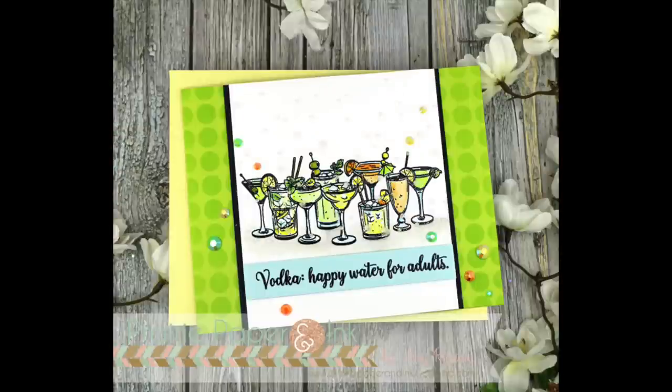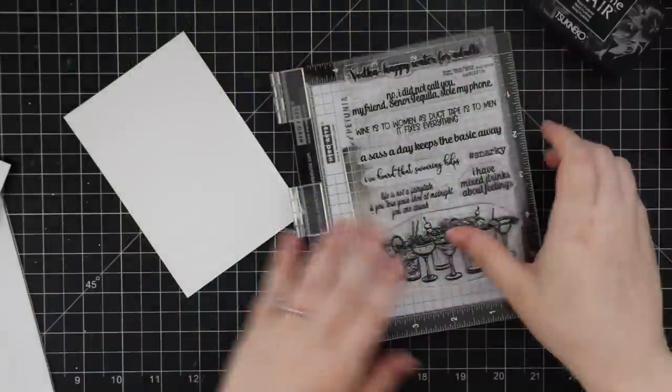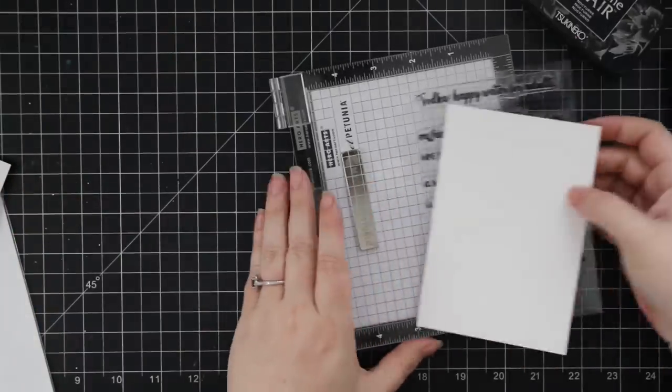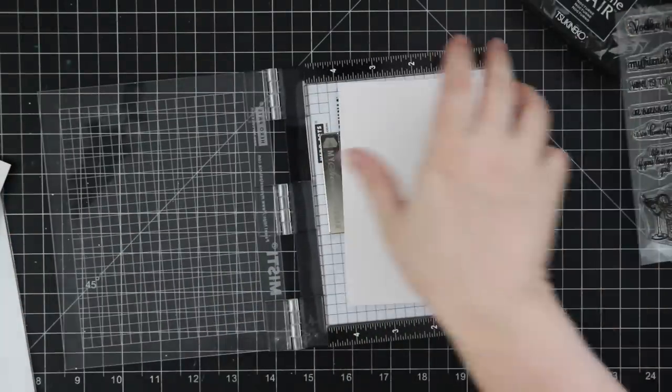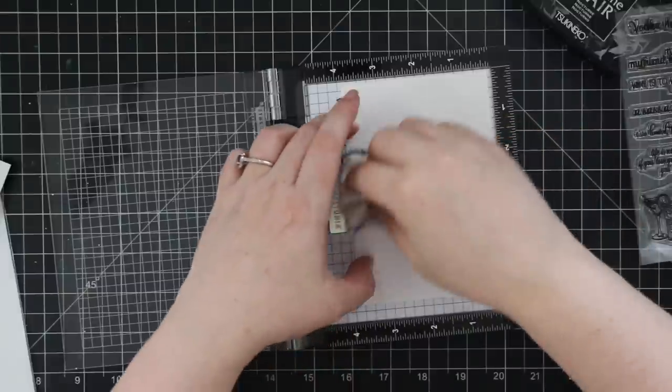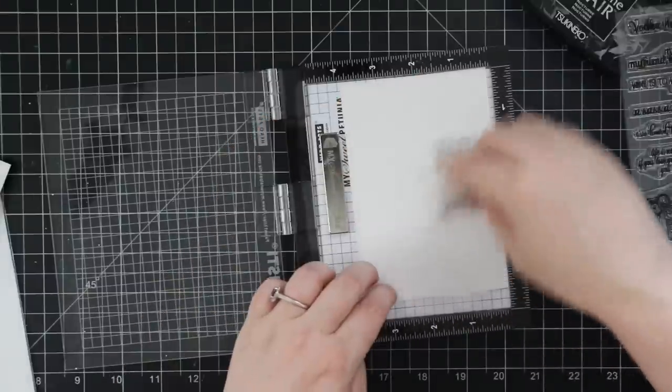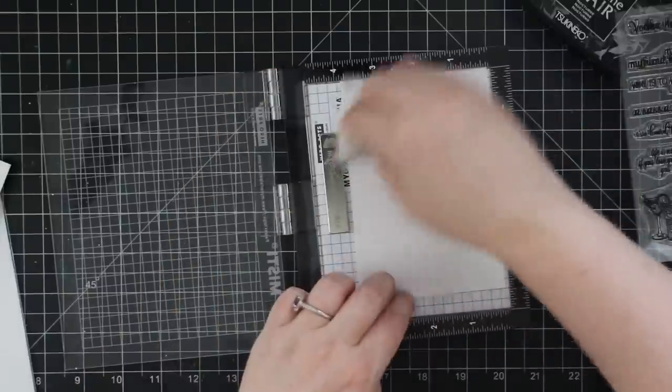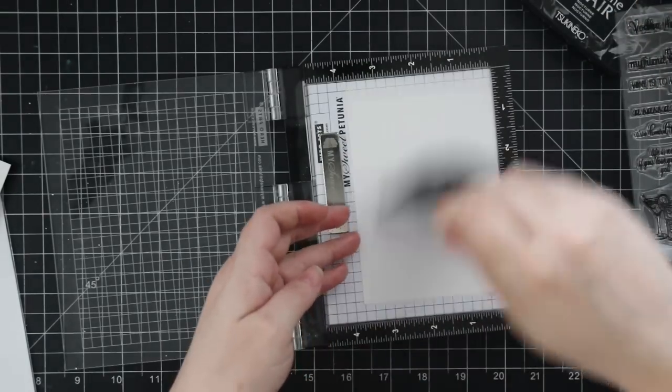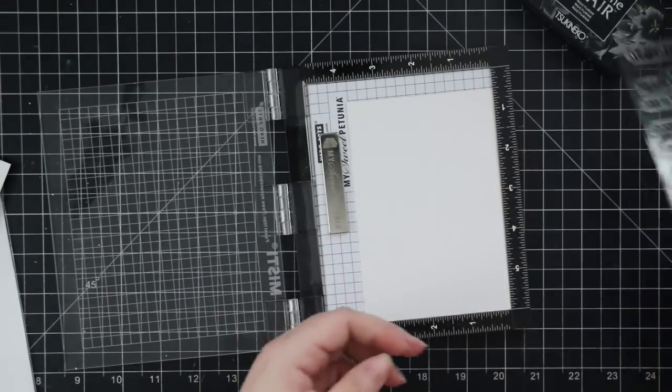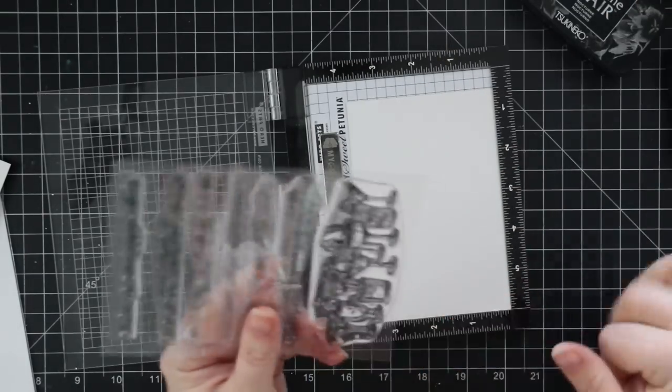Hello friends, Amy here with Prairie Paper and Ink. Today's card and video is part of the Simon Says Stamp Stamptember limited edition collaborations. Today's collaboration set is with Picket Fence Studios and it is the Happy Water stamp set. It's available as a stamp set and also as a stamp set with the coordinating wafer die.